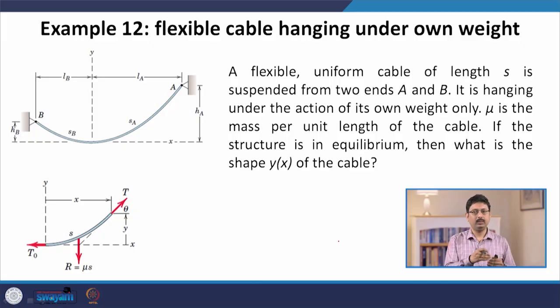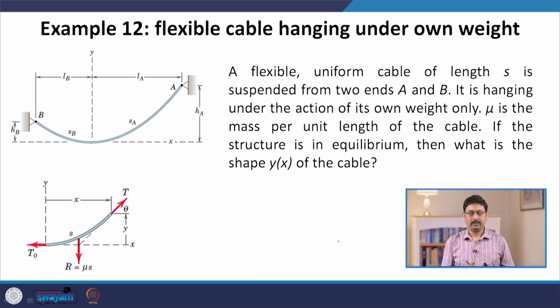In lecture week 3 of this course on Newtonian mechanics with examples, we were discussing the problem of the suspension cable. In the previous lecture, we took a cable supported at both ends, and we assumed there are some external vertical loads acting on the cable, but the cable itself is massless.